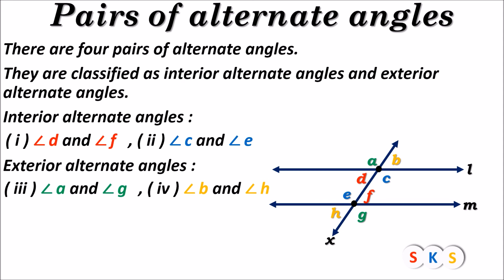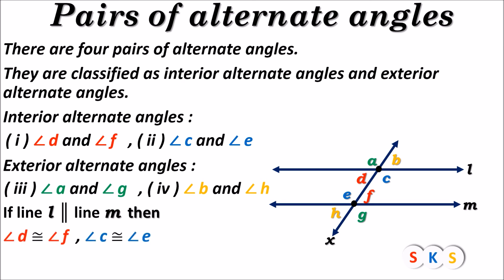So, angle A and angle G is one pair of exterior alternate angles, and angle B and angle H is the next pair of exterior alternate angles. If line L is parallel to line M, then angle D is congruent to angle F, angle C is congruent to angle E, angle A is congruent to angle G, and angle B is congruent to angle H. This means if a transversal intersects two parallel lines, then the alternate angles formed by them are congruent.